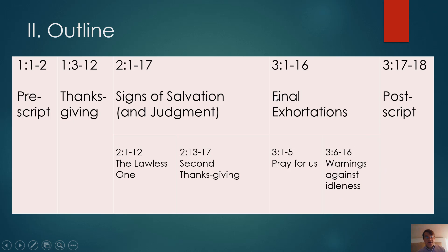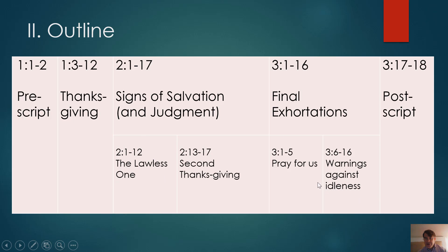Chapter 3:1 begins with 'the rest' — in Greek something like 'to loipon,' kind of like Gilligan's Island. There is a clear transition in the outline of 2 Thessalonians here. Paul asks them to pray for him and then gives another warning. So this section, 1 through 2:1-12 on the lawless one, and section 3:6-16, warnings against idleness — those are the key teaching components of 2 Thessalonians.